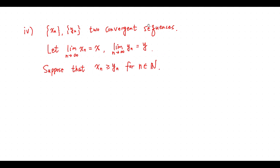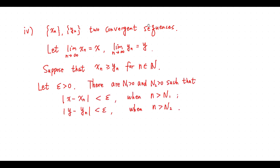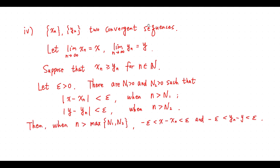Now we have two convergent sequences, {x_n} and {y_n}. Suppose that x_n is greater than or equal to y_n for any positive integer n. Let epsilon be greater than 0. There are positive numbers N1 and N2 such that when n is greater than N1, we have this inequality, and when n is greater than N2, we have this inequality. Then when n is greater than the maximum of N1 and N2, we have both inequalities.